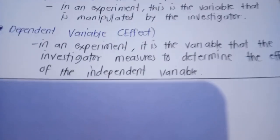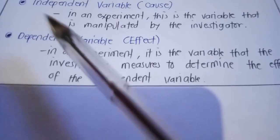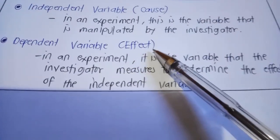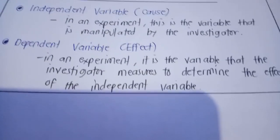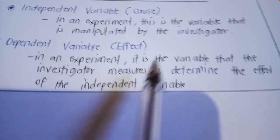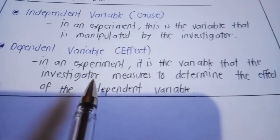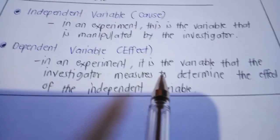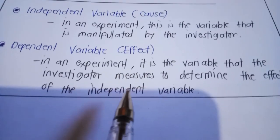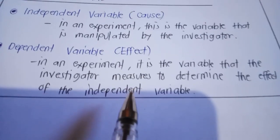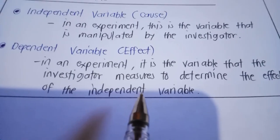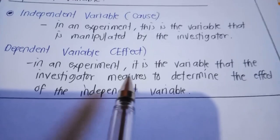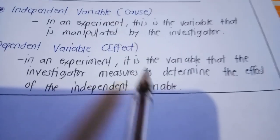On the other hand, the dependent variable refers to the effect. In an experiment, it is the variable that the investigator measures to determine the effect of the independent variable. In simple words, the dependent variable is being measured.